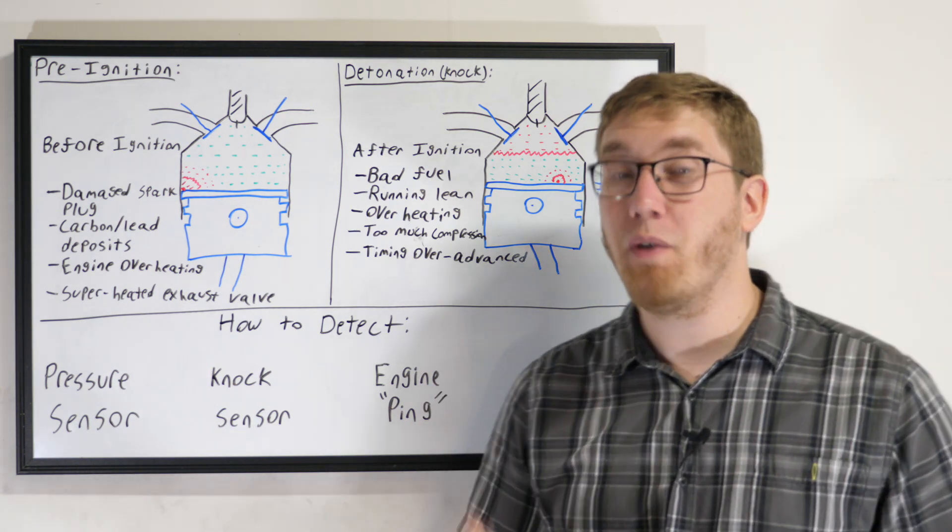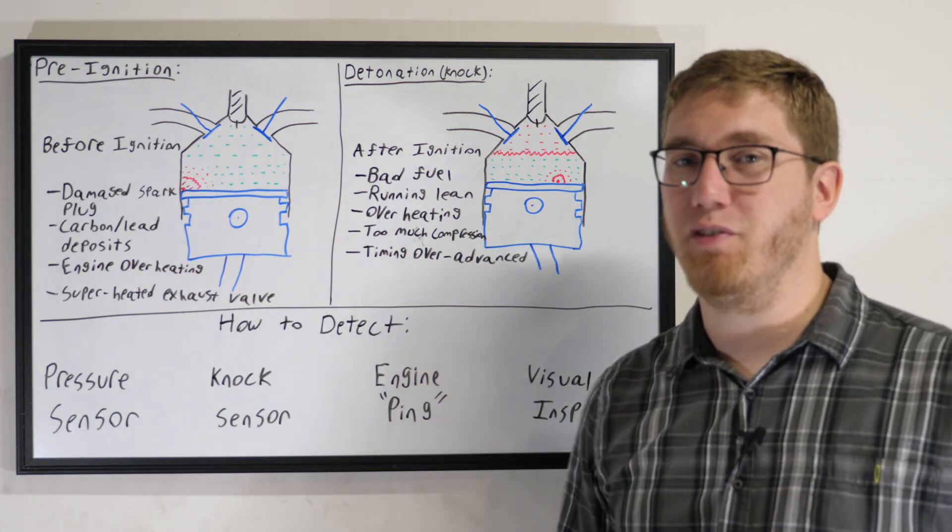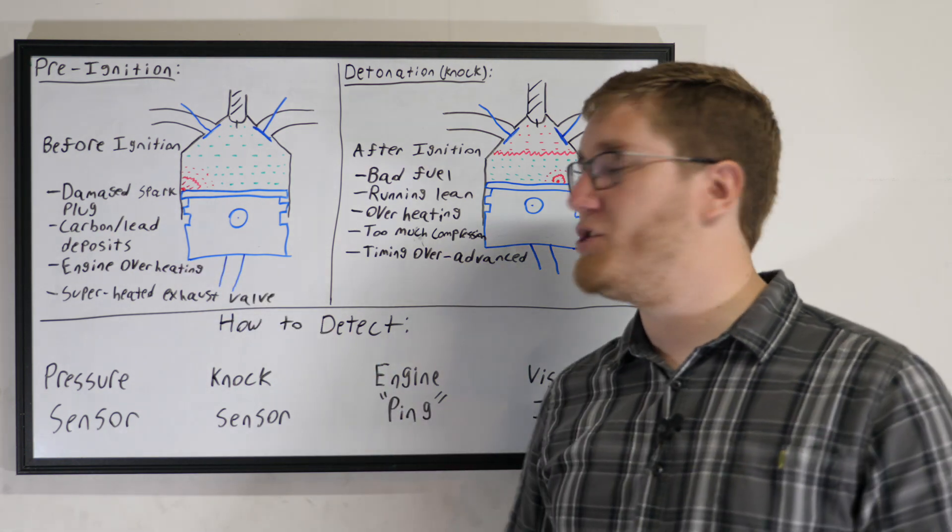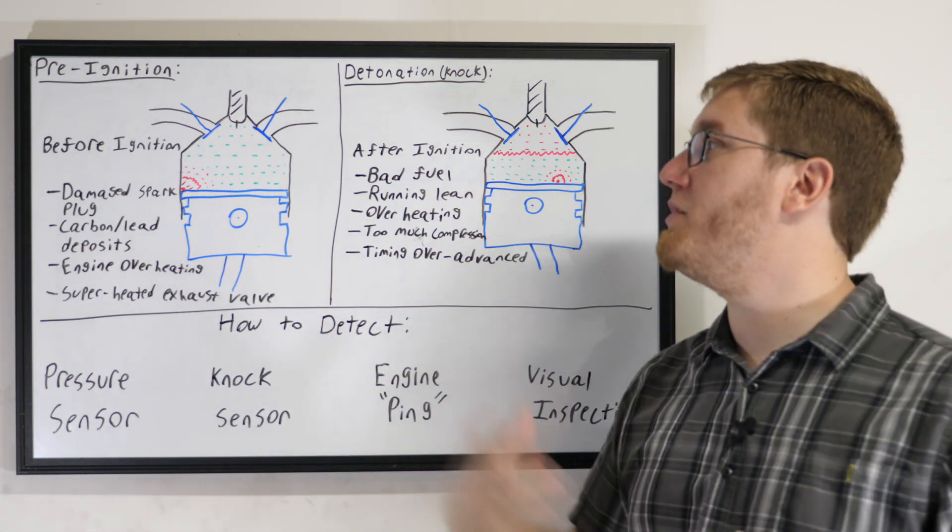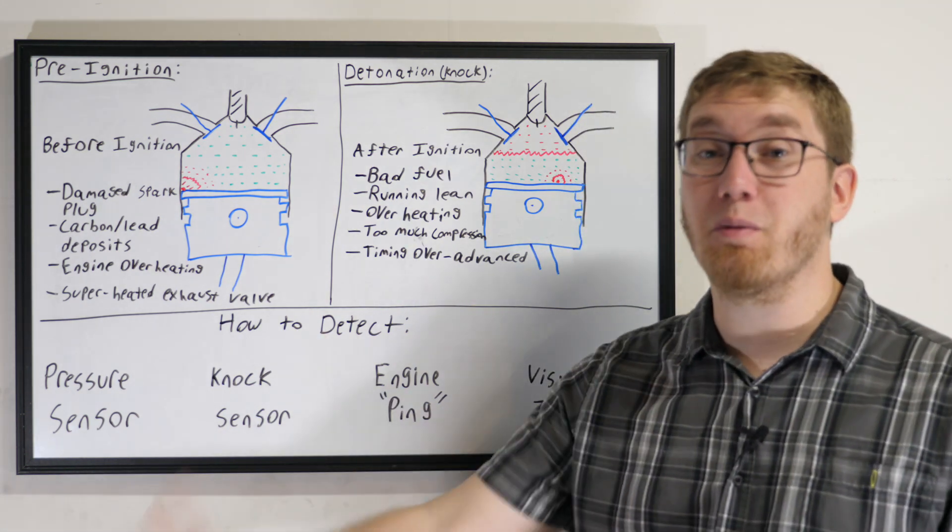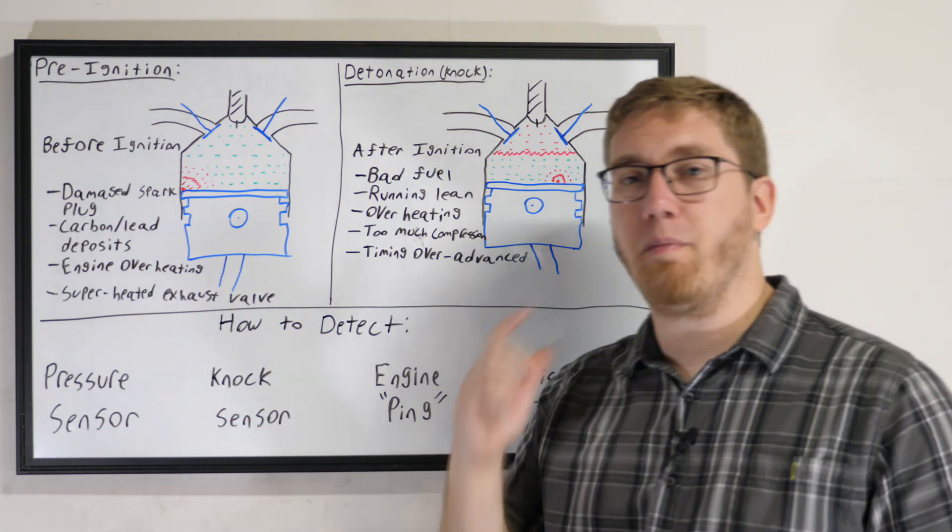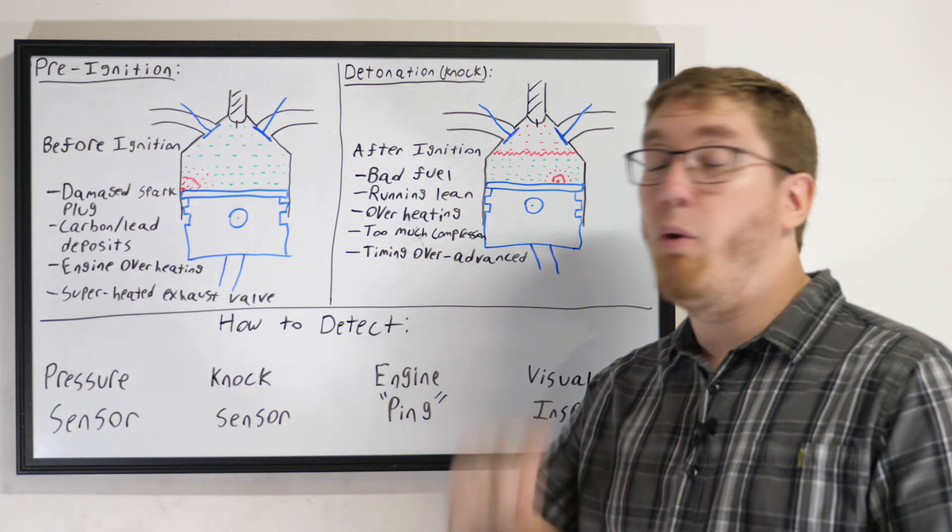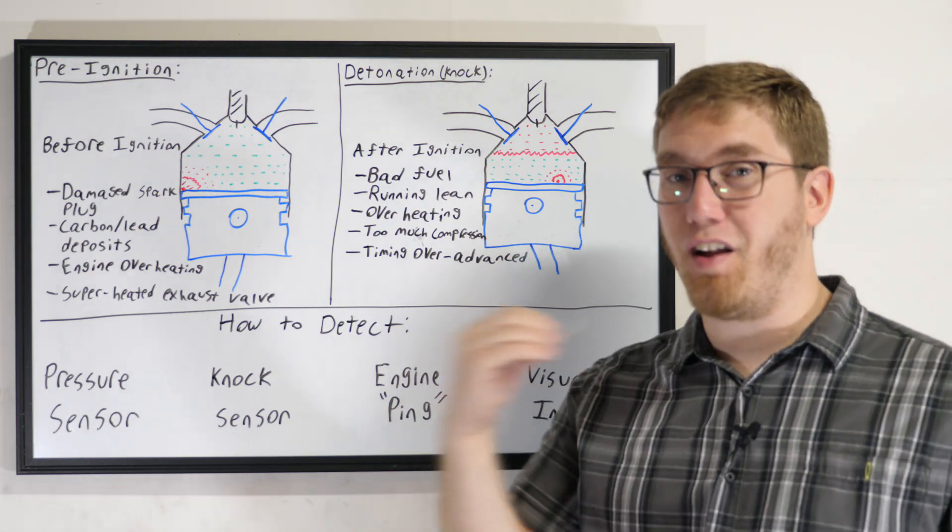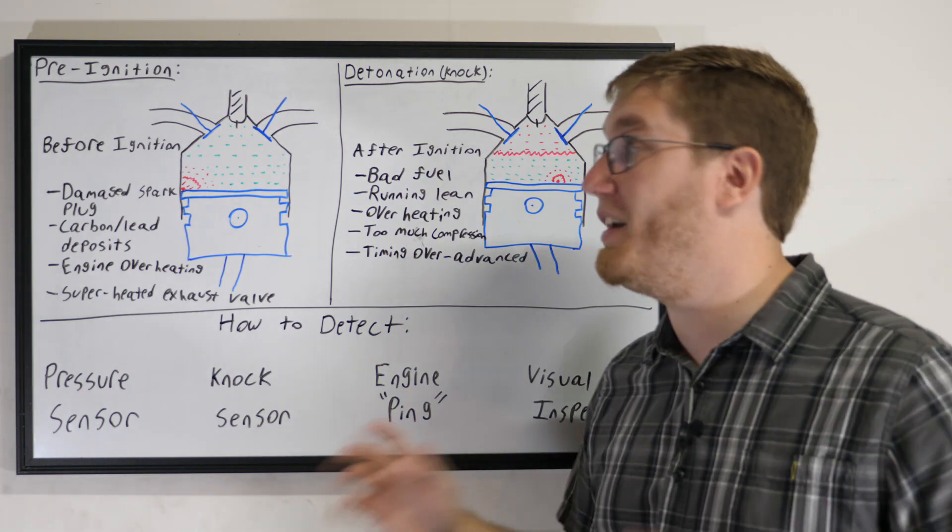It can be caused by carbon or lead deposit buildups within the cylinder or on the piston. If these get heated up enough, they begin to glow, and it'll act as a glow plug. It'll be so hot that it'll actually fire off that air-fuel mixture before you actually set your spark plug off. It can also be caused by engine overheating. If your engine is getting way too hot, it could lead to some of these components getting hotter than they're supposed to. And again, that can cause some of that air-fuel mixture to burn prematurely. And then it can also be caused by superheated exhaust valves. So if there's something wrong with your engine or if you're running a flawed map, you could end up overheating your exhaust valve, and if that exhaust valve gets too hot, once again, it'll set off some of the air-fuel mixture within the cylinder prematurely, and that's not good.